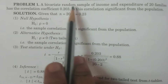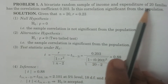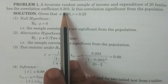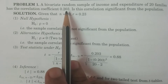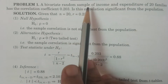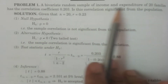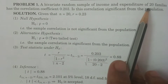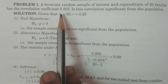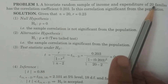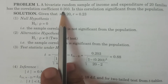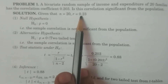A bivariate random sample of income and expenditure of 20 families has the correlation coefficient 0.203. Two variables x and y are considered, and of 20 families, which means n is equal to 20. The sample correlation coefficient is denoted by r, and r is equal to 0.203.